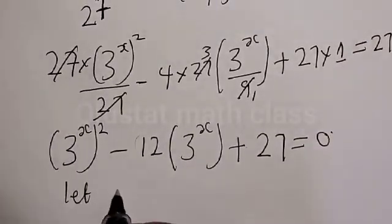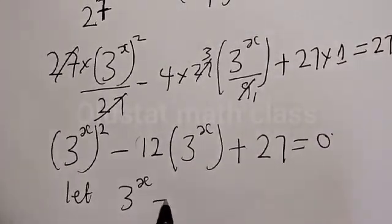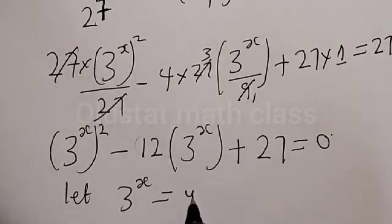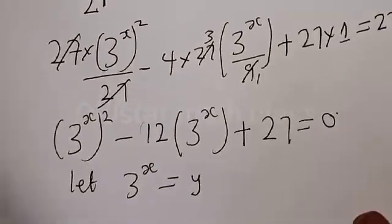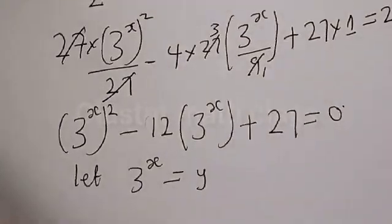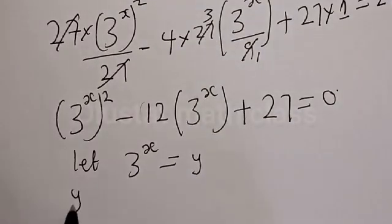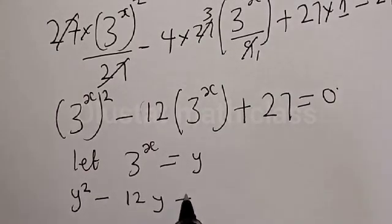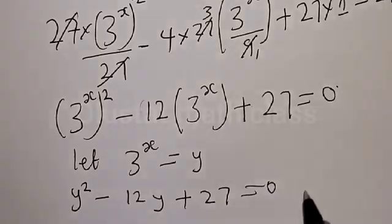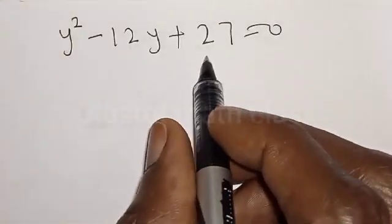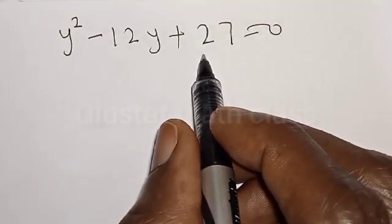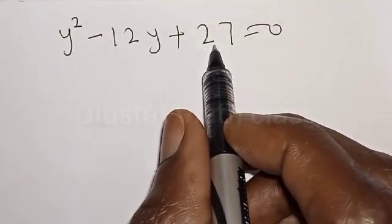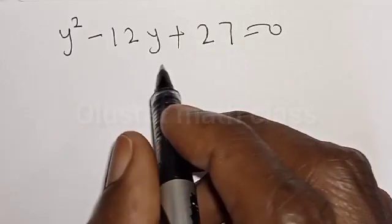Let 3 raised to the power x equal Y. Then we have Y squared minus 12Y plus 27 is equal to 0. This is a quadratic equation. Let's solve by the factorization method. We look for two numbers such that their product equals 27 and their sum equals minus 12.